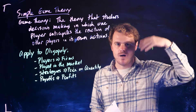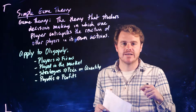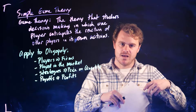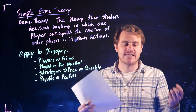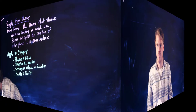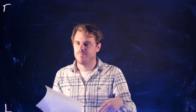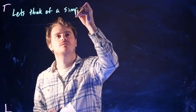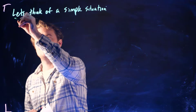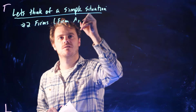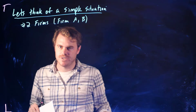Now let's apply this to a duopoly example with two firms where we simplify their strategies. They can either compete and produce some quantity, or they can collude and each produce half the monopoly outcome. To get familiar with the game theory environment and payoff matrices, let's think of a really simple situation with two firms — firm A and firm B.